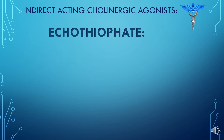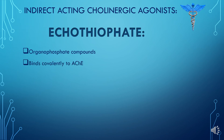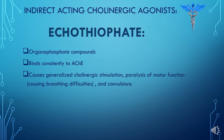Now, we have the irreversible indirect-acting cholinergic agonist ecothiophate. This is an organophosphate compound which is poisonous and can be used for suicidal and homicidal purposes. It is poisonous because it covalently binds to the acetylcholinesterase enzyme and permanently inhibits its activity.